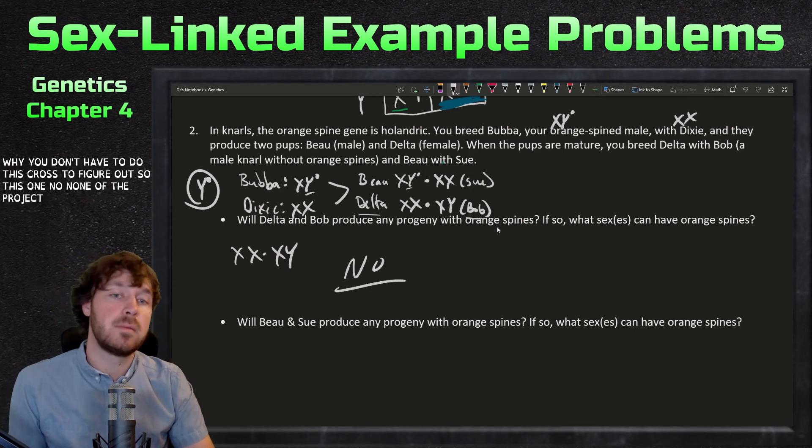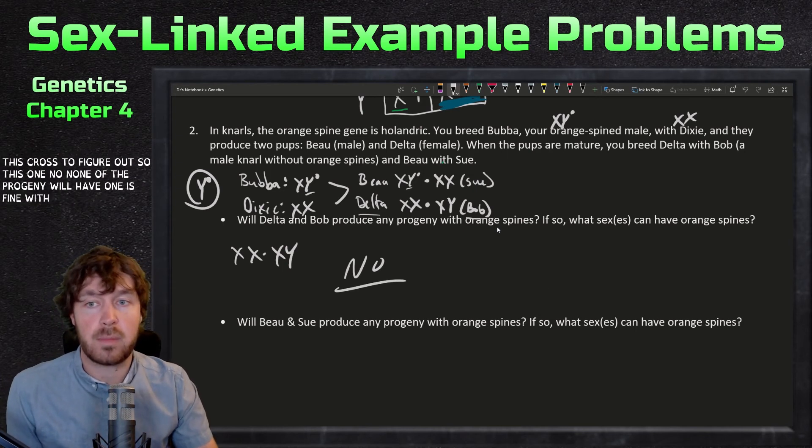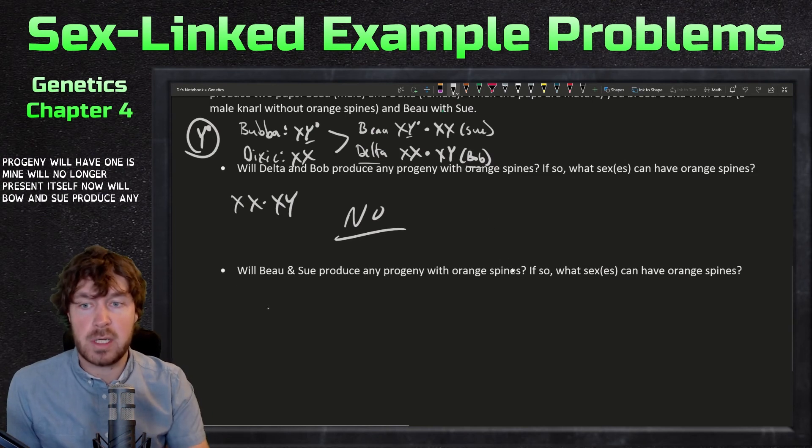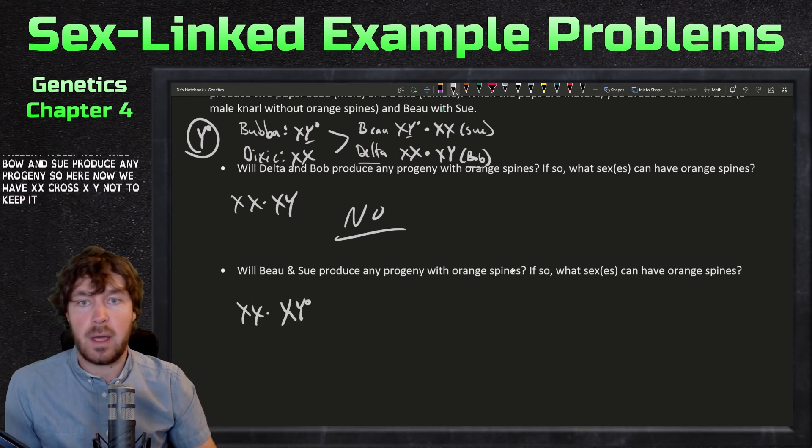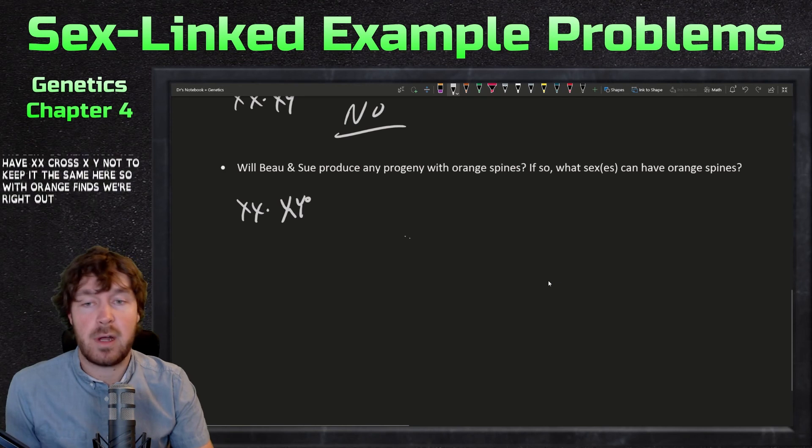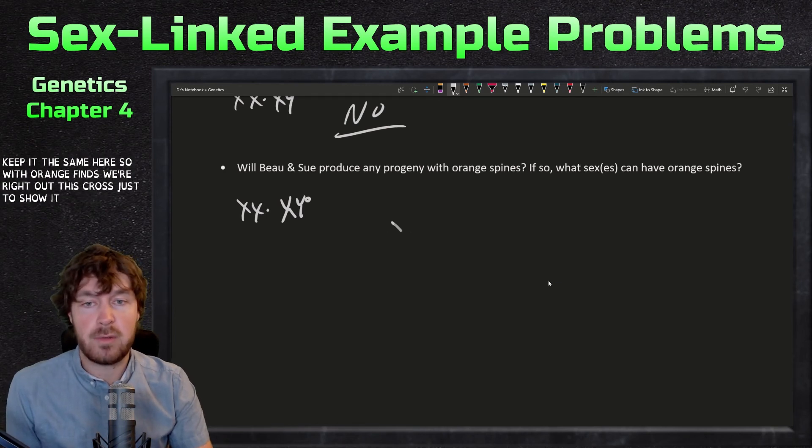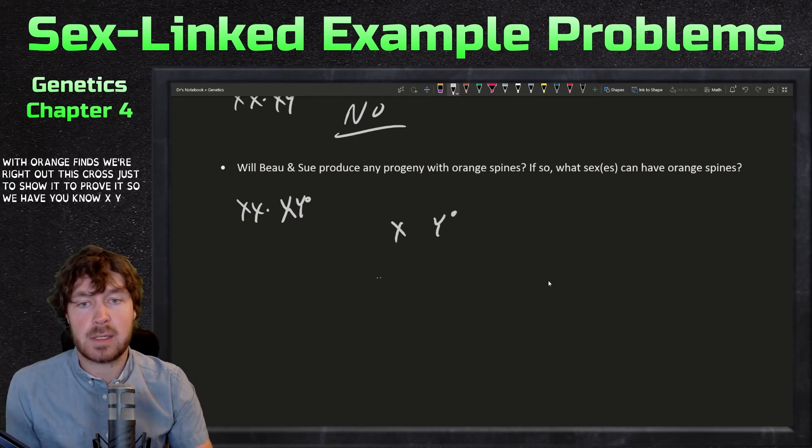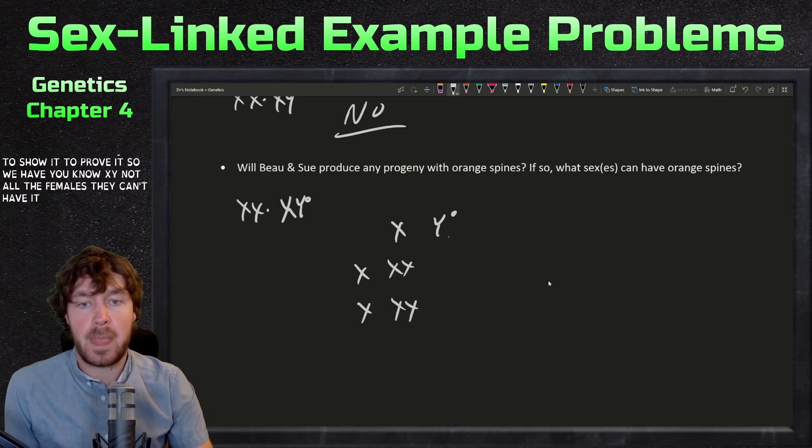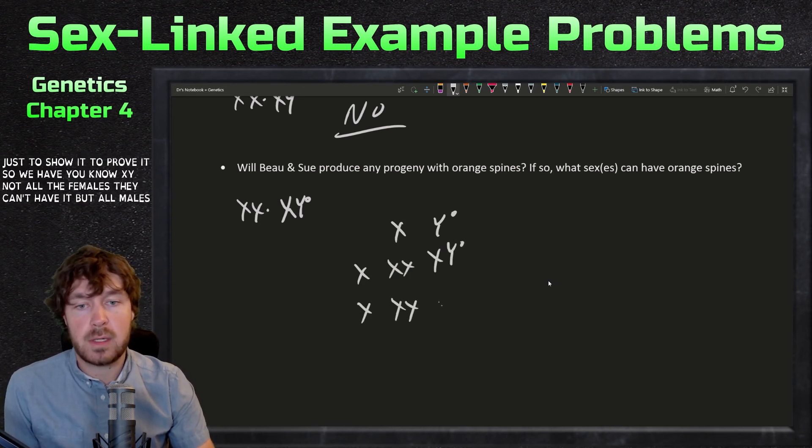Will Bo and Sue produce any progeny with orange spines? Here now we have XX cross XY naught to keep it the same. We'll write out this cross just to show it, to prove it. We have XY naught, XX. All the females, they can't have it, but all males will continue to have it. So yes, 100% males.